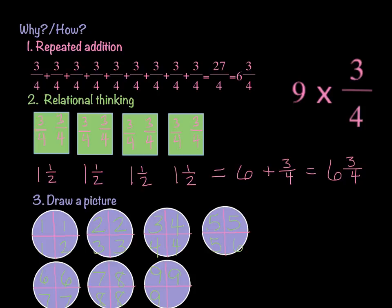We're going to take a look at three different strategies that we can use to multiply a whole number times a fraction, which is what I have over here, 9 times 3 fourths. Basically, I'm going to show you three different ways to do the same problem. The first way that we're going to talk about is repeated addition.